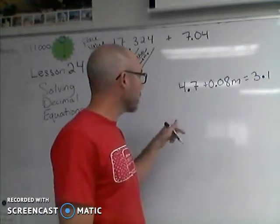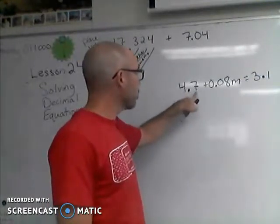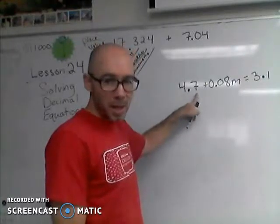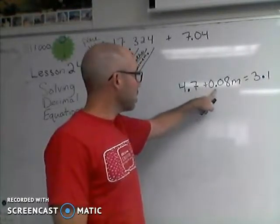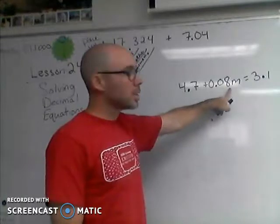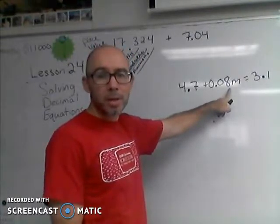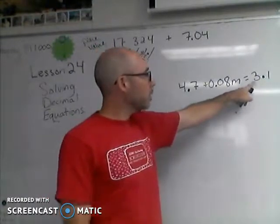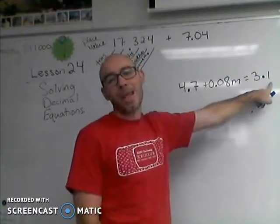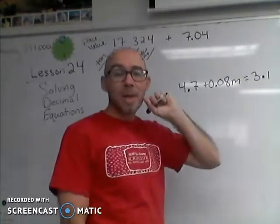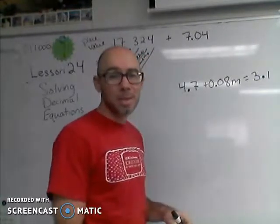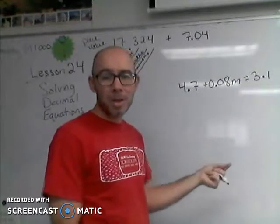So what do I mean by that? Well, this is 4.7 or 4 and 7 tenths. This here is 0.08 - we could say this is 8 hundredths. And over here 3.1, or 3 and 1 tenth. So you have to say those decimal places in order to know how much to multiply by.